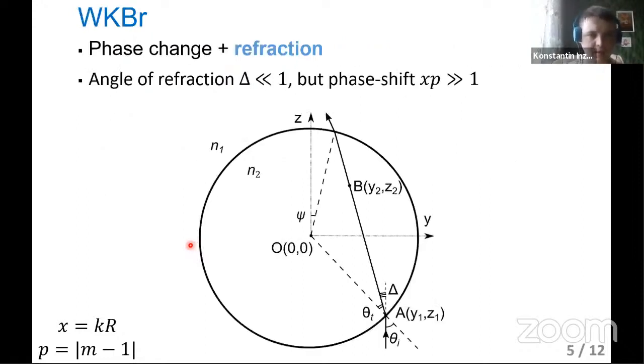Here you can see our new method, WKB-R. This method calculates not only phase change but also refraction. Usually we have that angle of refraction is small, but phase shift is large. Here you can see how it works qualitatively. First of all, we calculate entry point A, and then we account for refraction. Then we can calculate phase shift parameter or phase shift. So we can find internal electric field at point B.